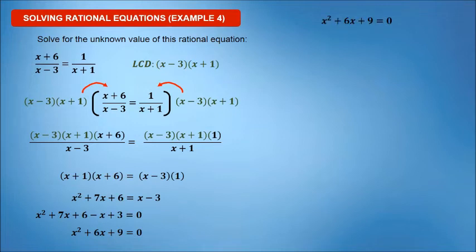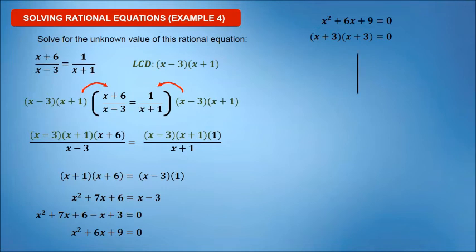Now, solve for the value of x. We can use factoring, completing the square, or the quadratic formula. Factoring is possible. The factors are x plus 3, times x plus 3. Equate both factors to 0. The possible value of x is negative 3.